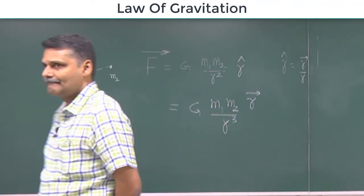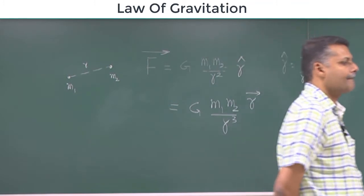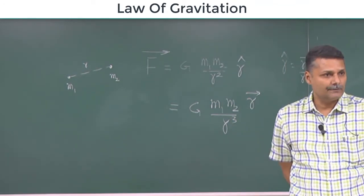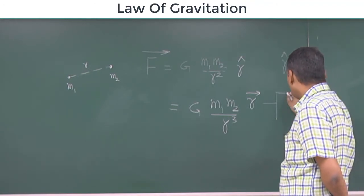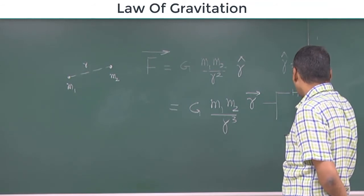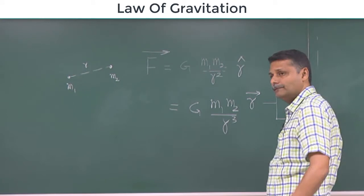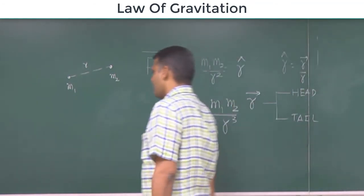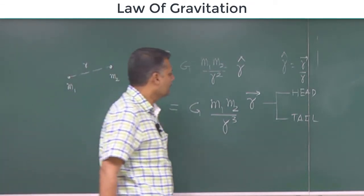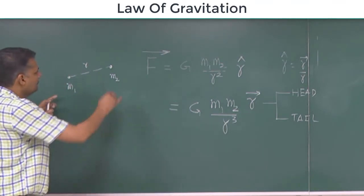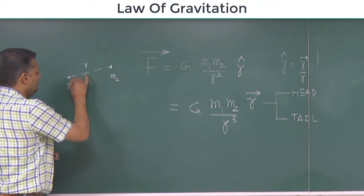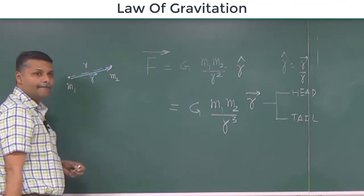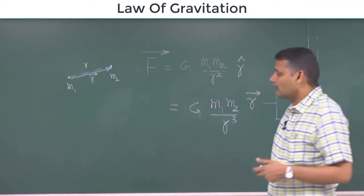This is a vector. Now, how do we show this r-cap? Tail where? Head and tail of this r-cap. This is a vector r-cap. How do we show this r-cap?